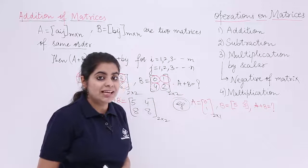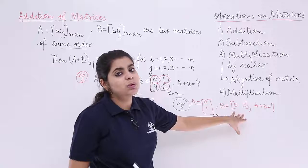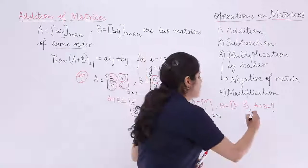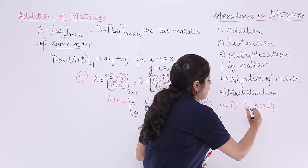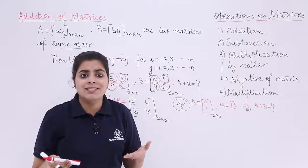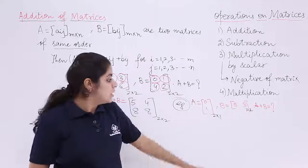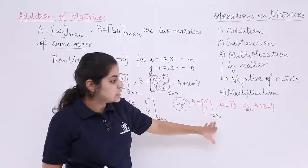What about the second matrix? The second matrix is 1 row, 2 columns, so it is 1 by 2. Now 2 by 1 and 1 by 2, are they same? No, they are not same because the first case has 2 rows,